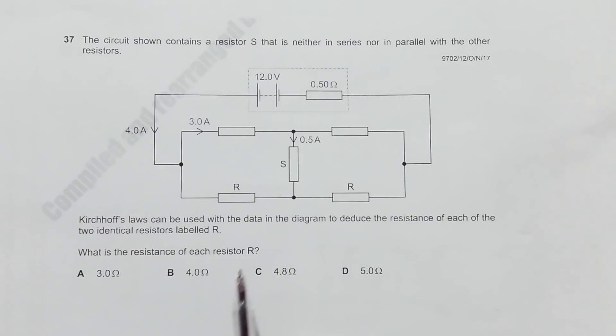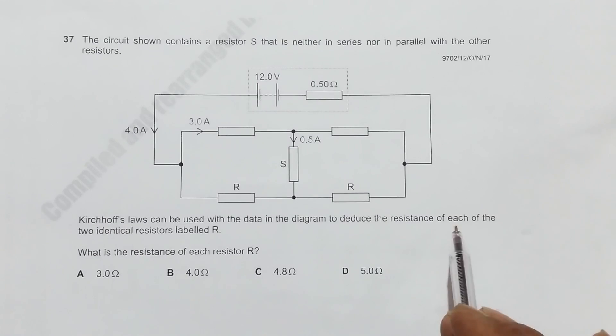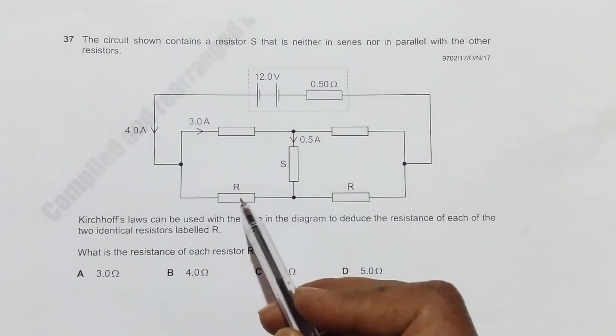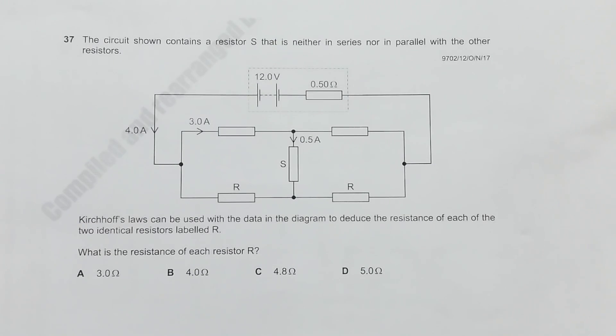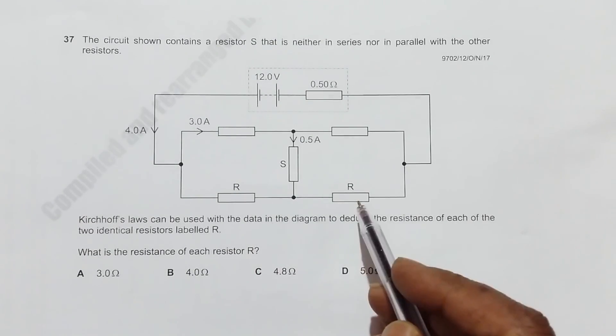Kirchhoff's laws can be used with the data in the diagram to deduce the resistance of each of the two identical resistors labeled R, and we are required to find the value of these resistances.